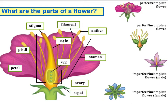Let's start with a complete flower. A complete flower has all four parts: petals, sepals, stamen, and pistil. The petals are the brightly colored parts that attract pollinators. The sepals are green, found below the petals, protecting the flower parts when it's just a bud. The stamen is the male part of the flower — remember, the last three letters spell 'men.' The pistil is the female part, which you can see here.